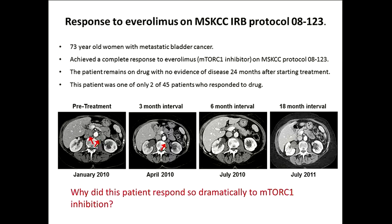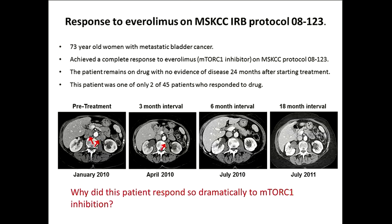The initial inspiration for my deep dive in this area was a clinical trial in patients with bladder cancer — a very simple study. We took everolimus, which was already approved in renal cell cancer, and tried it in bladder cancer. Unfortunately, like every bladder study done in the last 30 years, this was a negative trial. We've had no new FDA-approved agents in bladder cancer since gemcitabine about two decades ago. There were 45 patients enrolled; only two responded. The conclusion was that everolimus is inactive in patients with bladder cancer.